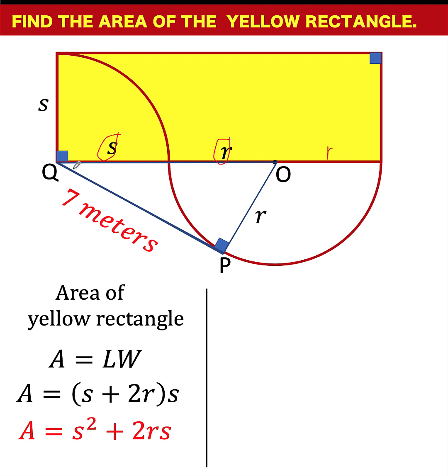Next, consider this right triangle O, P, Q. From the Pythagorean theorem, the square of the leg Q, P, with a measure of 7 units, is 7 squared. The square of the other leg O, P, is r squared. That is equal to the square of the hypotenuse, s plus r.